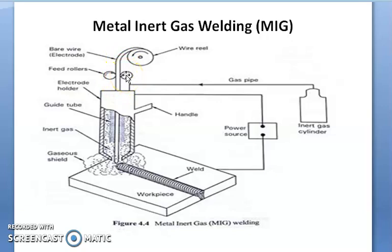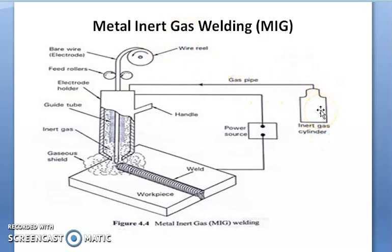Now let's look at the components of this welding process. The first one is the bare electrode that we have seen. The second one is the cylinder, where we are using inert gases — either helium or argon — that are stored in this cylinder. The workpiece to be welded is steel material. During operation, the bare consumable electrode in the form of wire is held and guided by the guided tube.